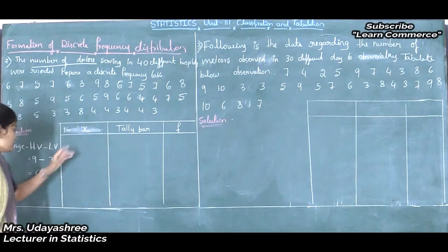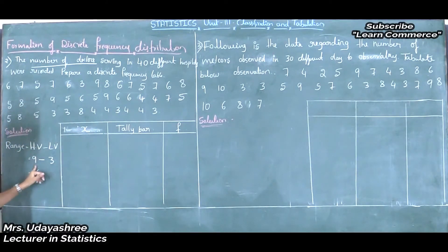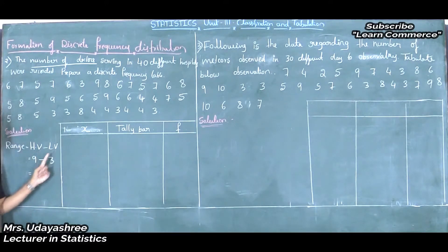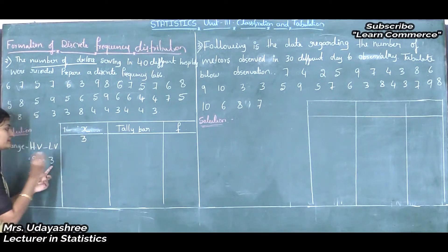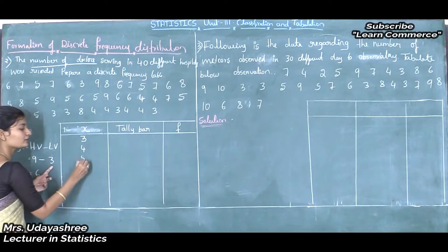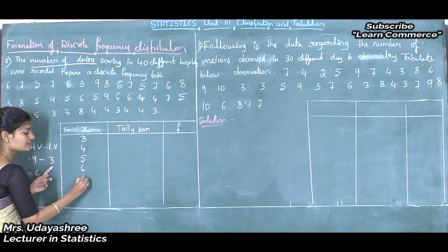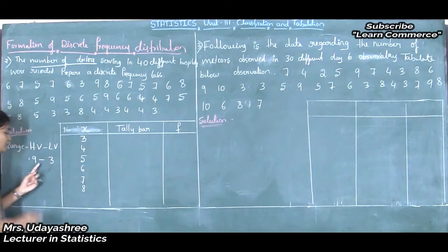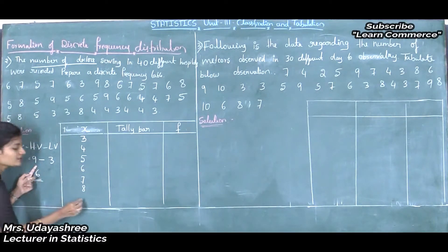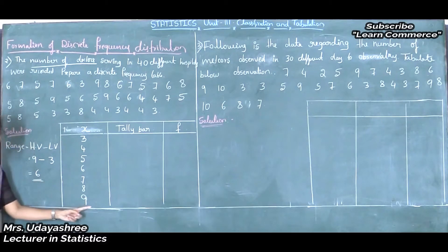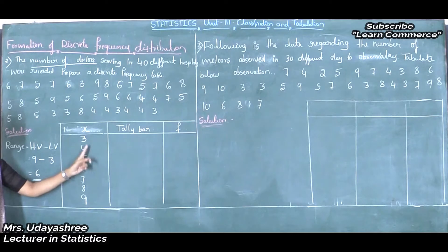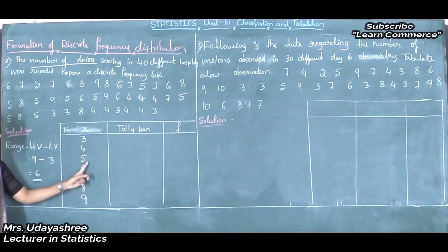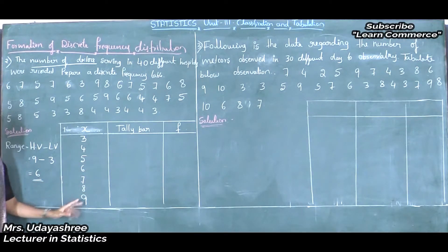The range is 9 minus 3, which is 6. The lowest value is 3, so I will start the variable values from 3: 3, 4, 5, 6, 7, 8. The highest value is 9, so I will stop at 9. The X variable values are 3, 4, 5, 6, 7, 8, and 9.